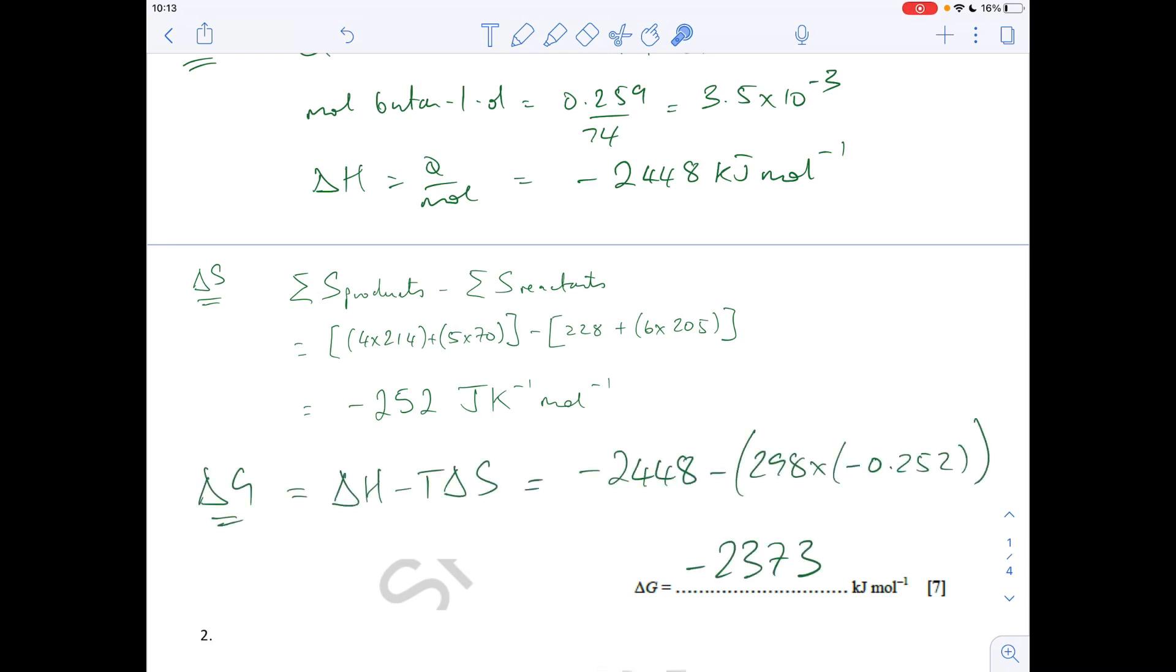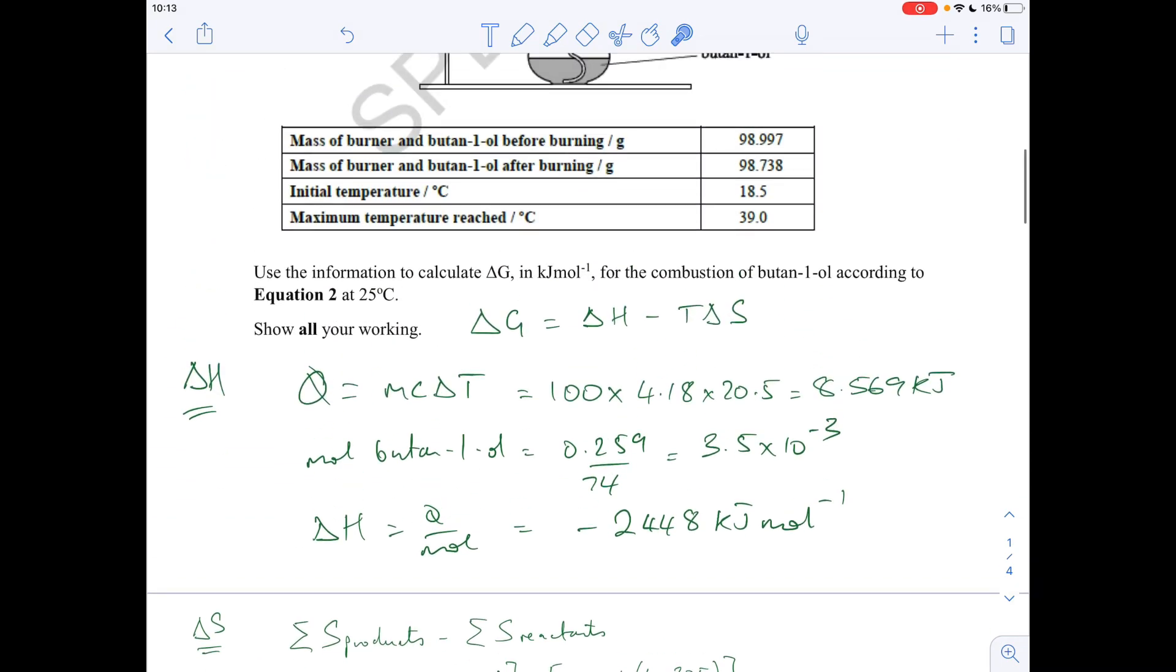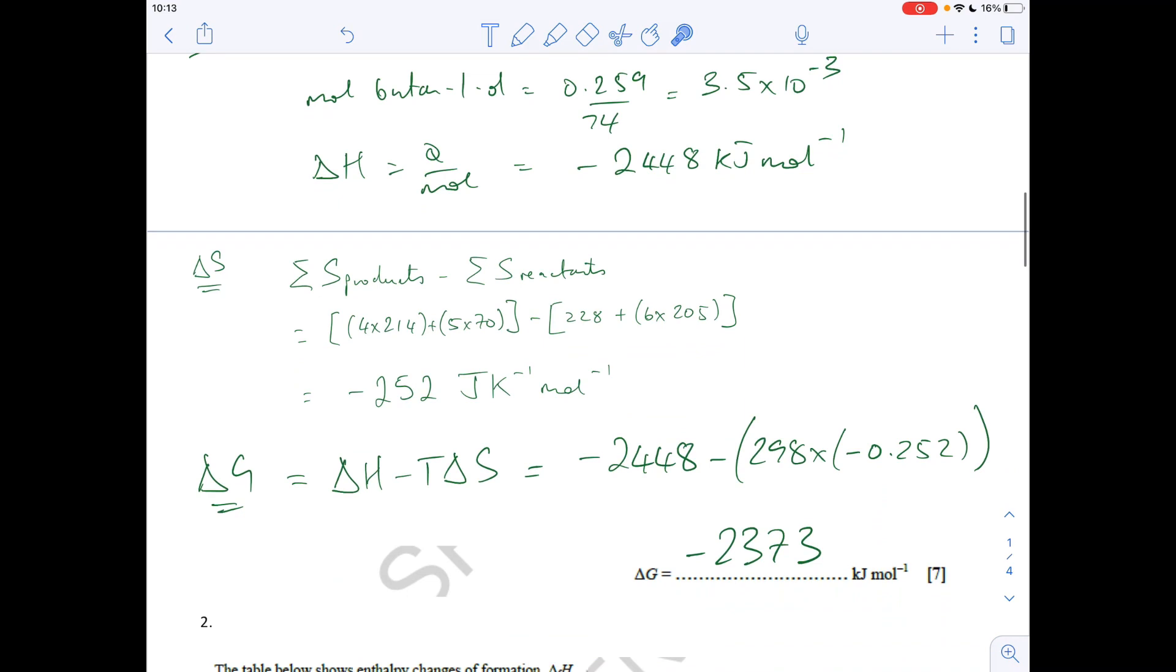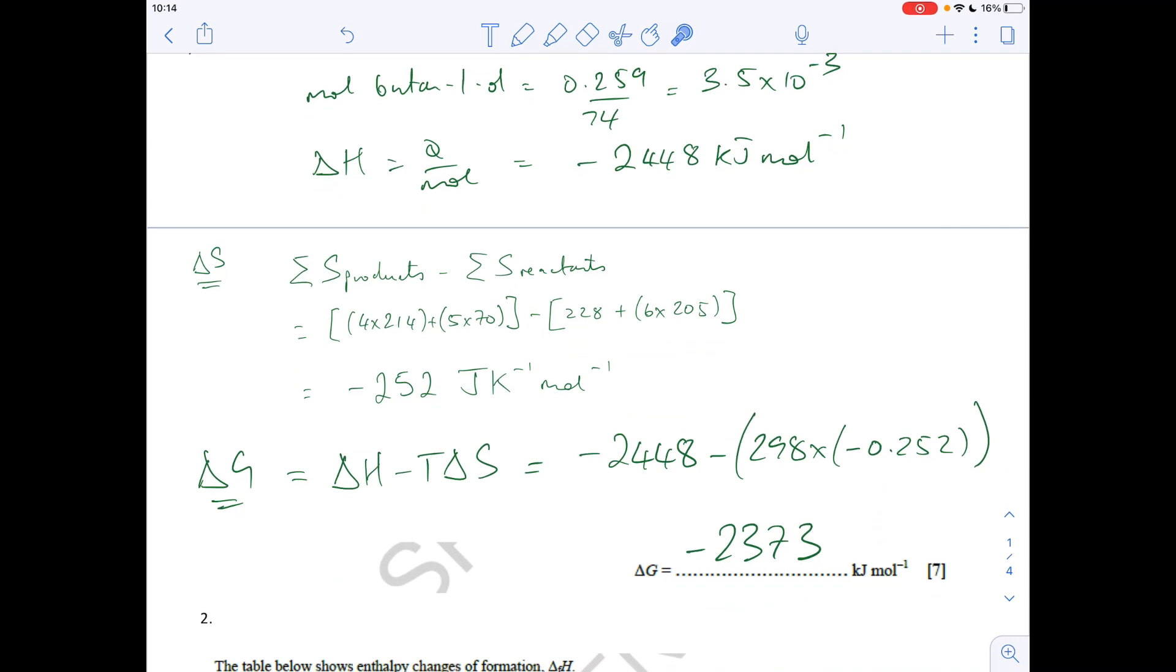And finally, to get delta G, remember we said it's delta H minus T delta S. The only catch here really is to make sure you put your delta S value into kilojoules per kelvin per mole, because your delta H value is in kilojoules per mole. T is 298 because it says it's at 25 degrees C there. So the answer, minus 2373.